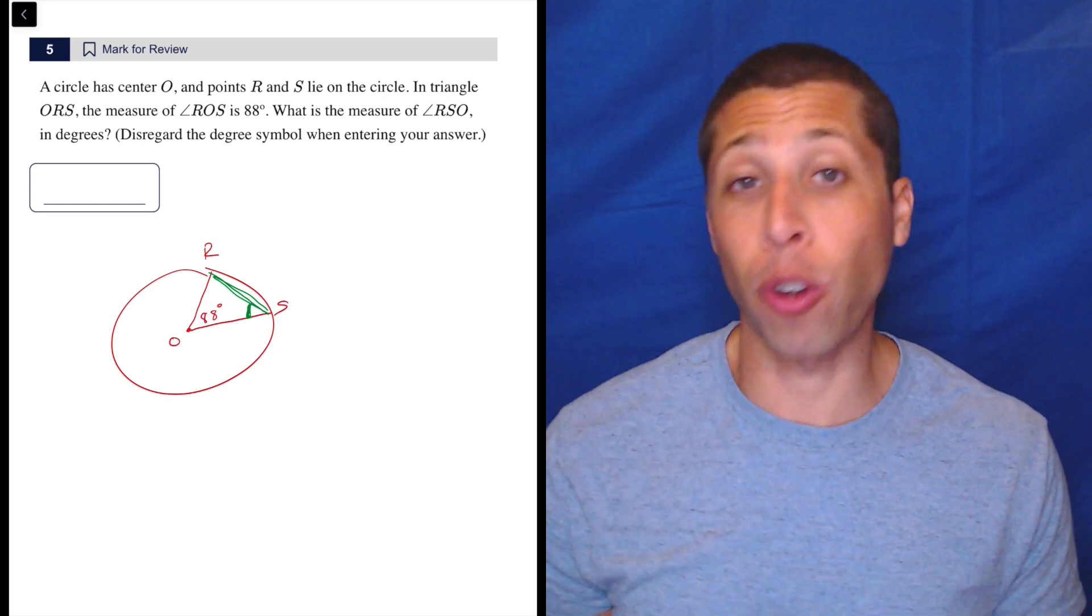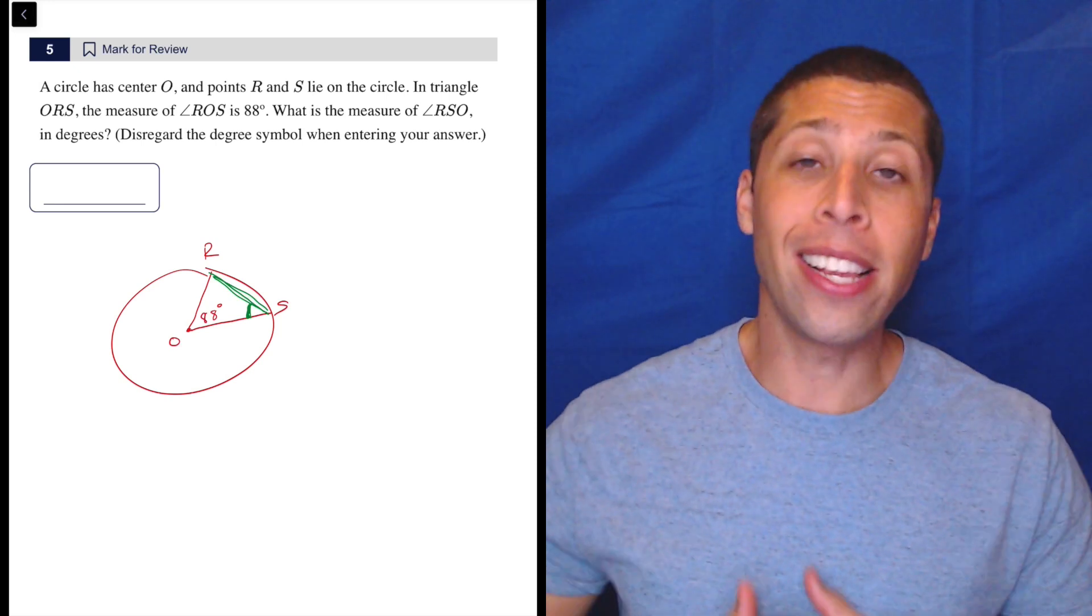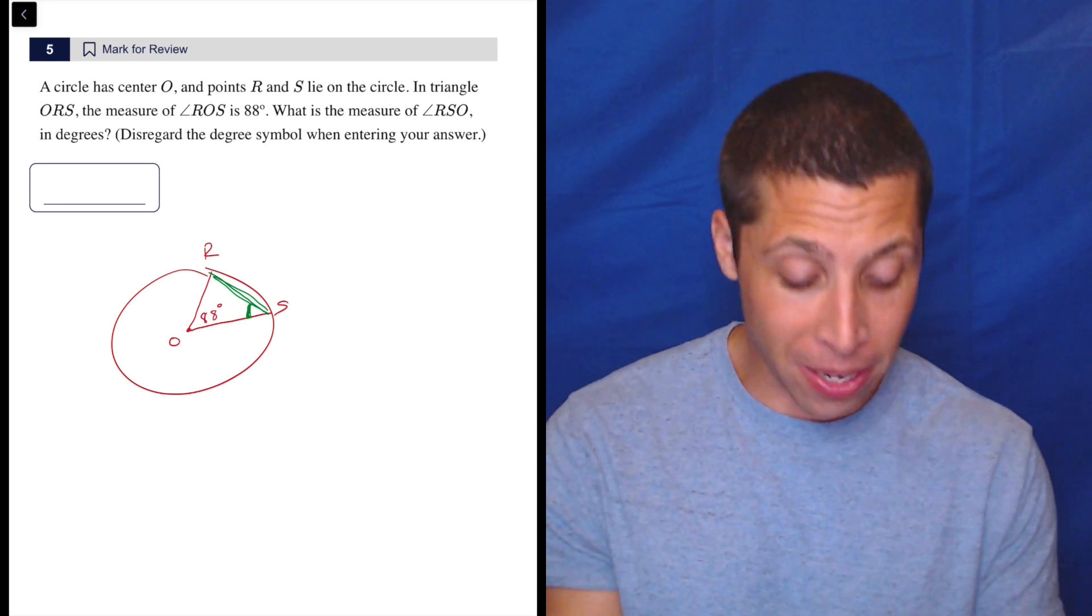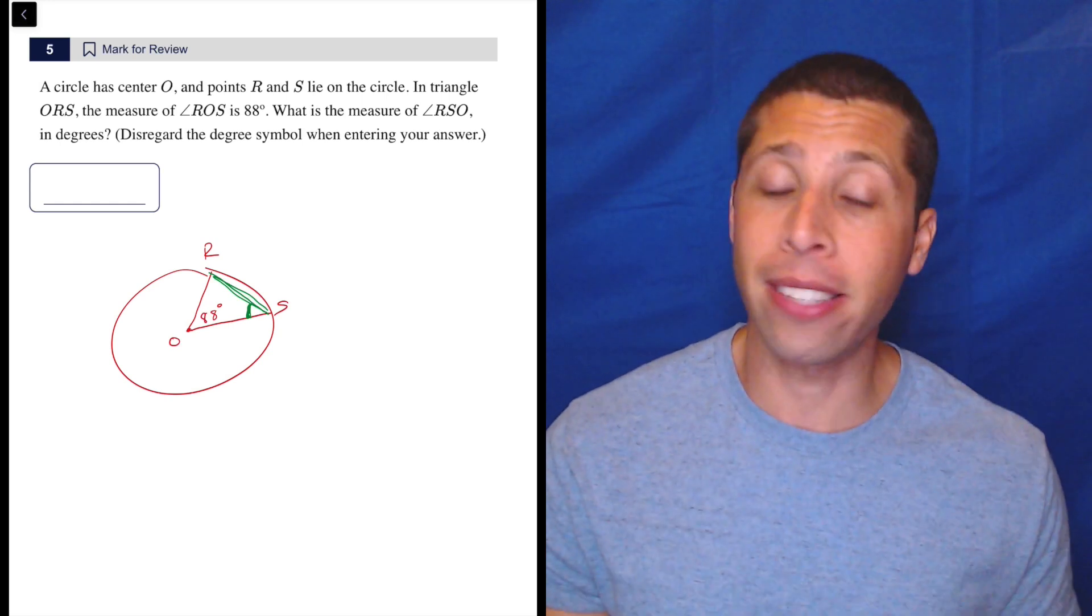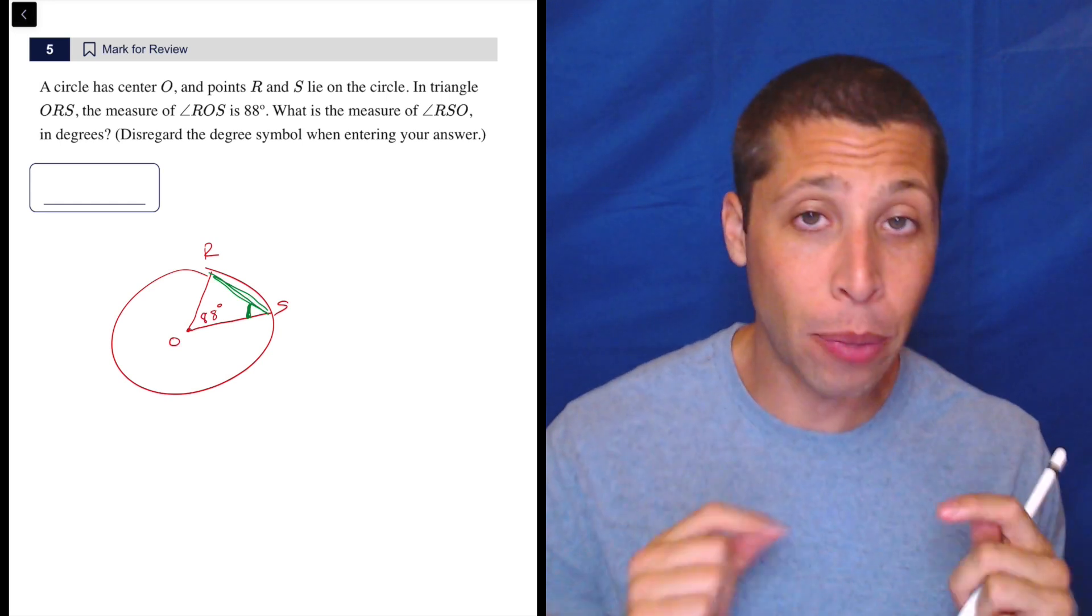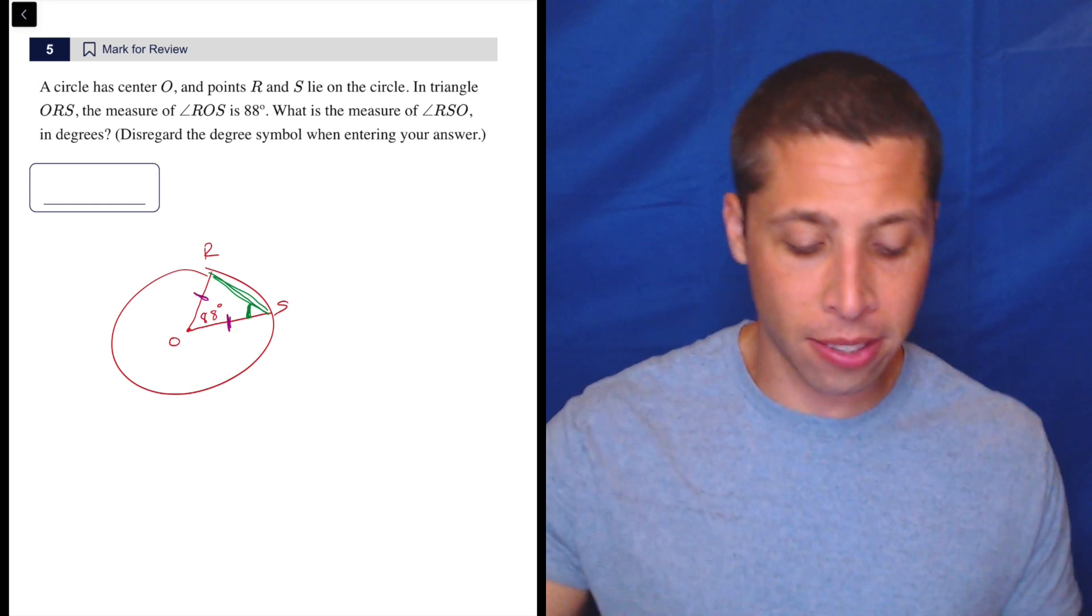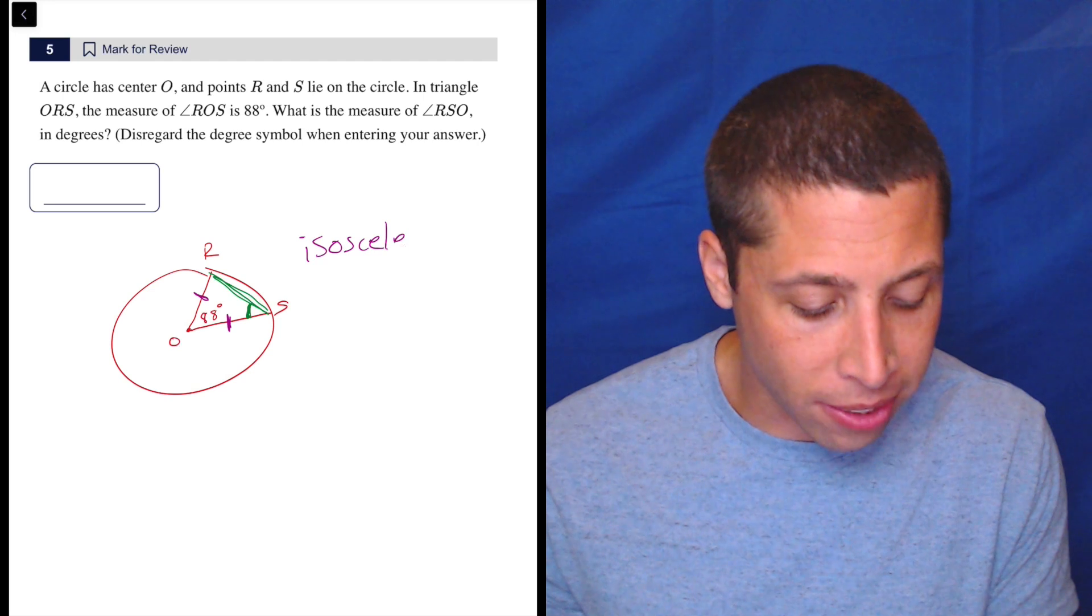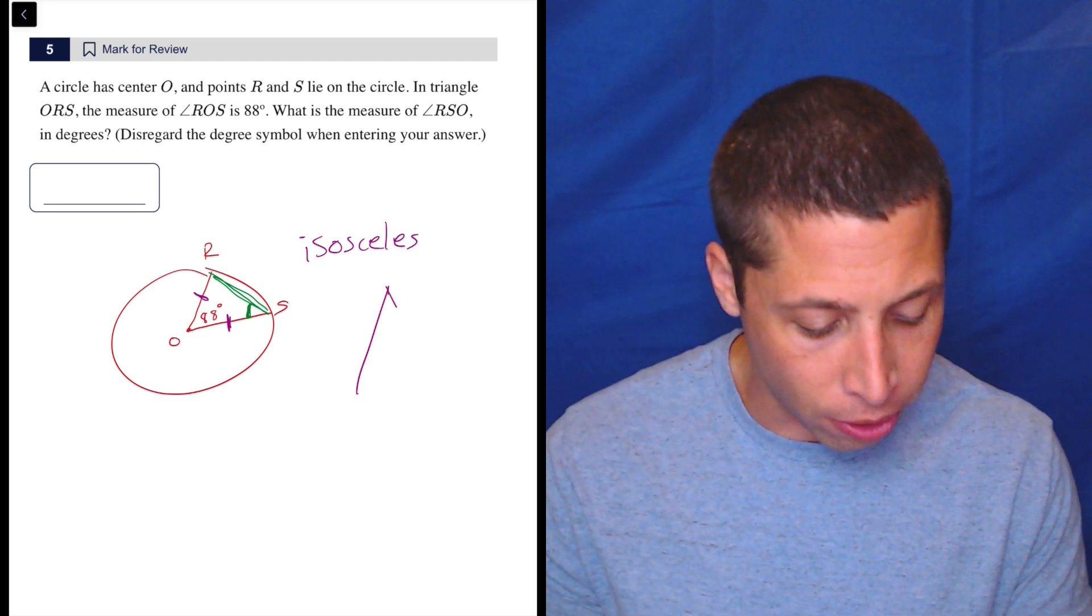Now, the reason drawing radiuses and making triangles is so important for circle questions in particular is that radiuses have a very special property. They're all the same. Maybe not in my bad drawing circle, but in a real circle, every radius has the exact same measure. And that's how we can solve this question. This isn't just any triangle, it is an isosceles triangle.